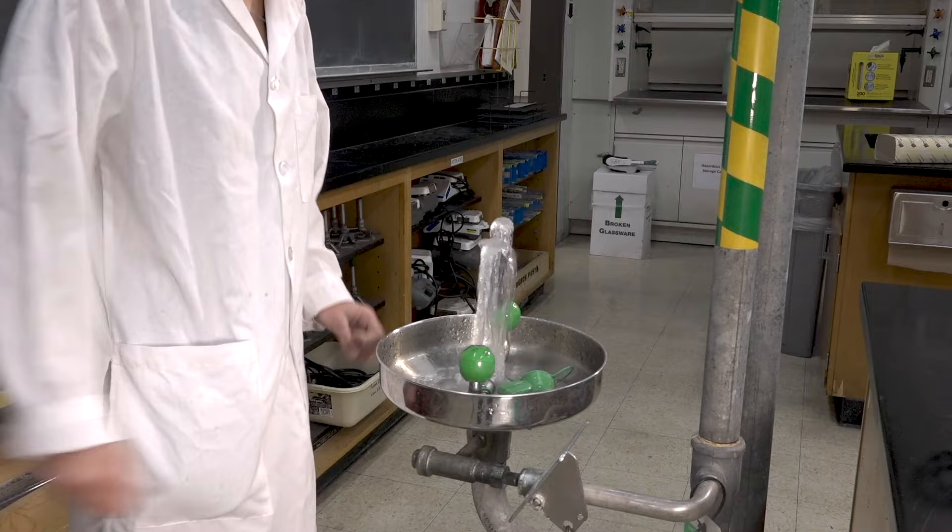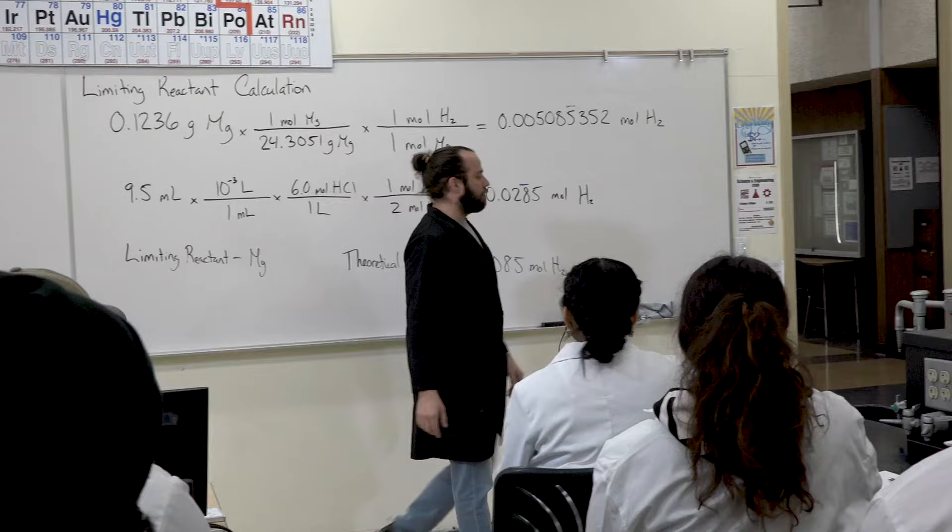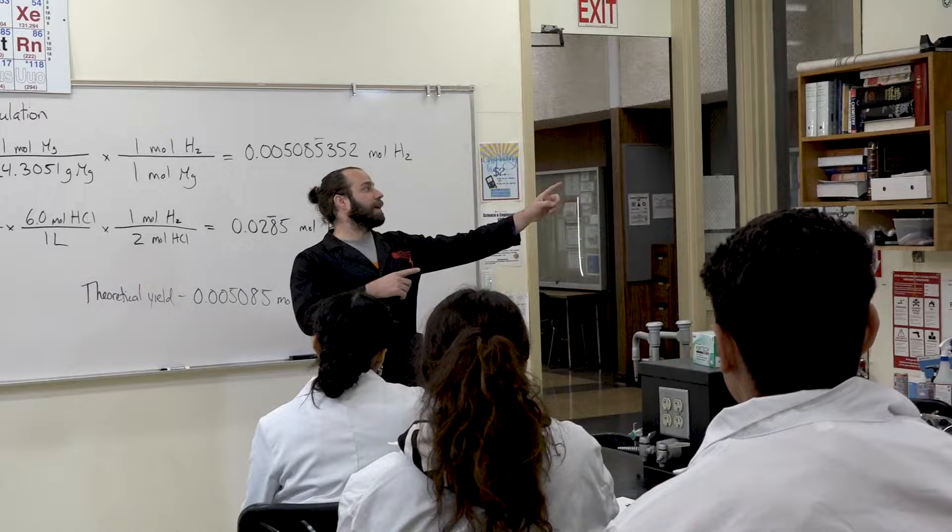Chemistry labs utilize open flames and dangerous chemicals in many experiments. Knowing the location of the safety equipment in your room is important to mitigate the danger associated with such risky materials. Please take note as your instructor points out the specific location of equipment in your particular lab space.